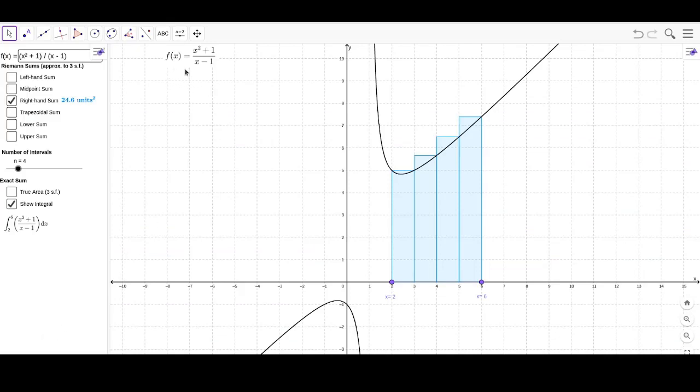If you see here, f of x equals x squared plus 1 by x minus 1. This is how the graph looks near the points 2 to 6. We are computing the right-hand sum by taking 4 intervals. These are our intervals: 2 to 3, 3 to 4, 4 to 5, and 5 to 6.